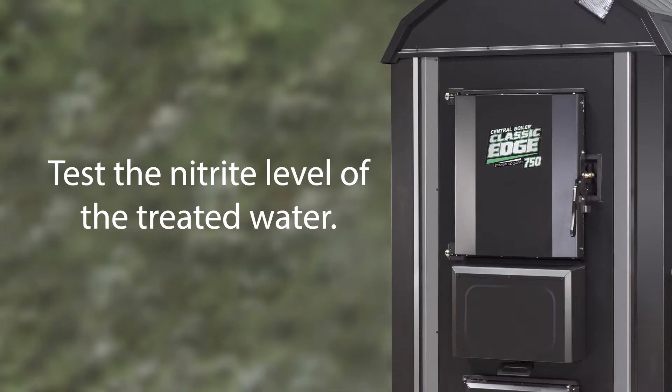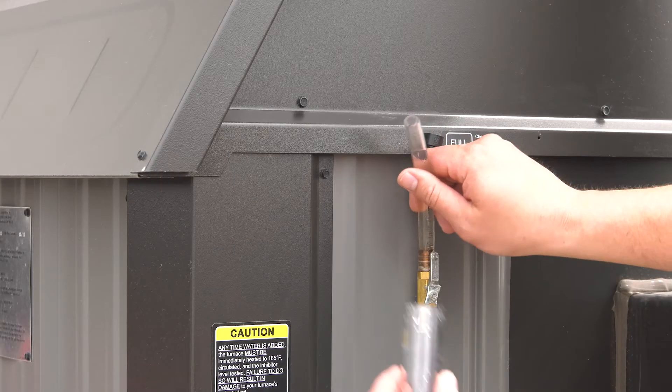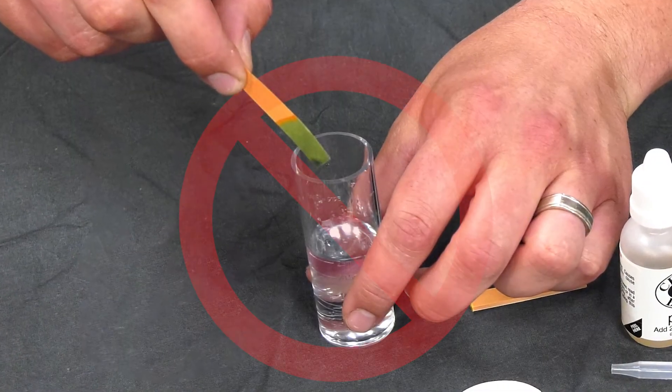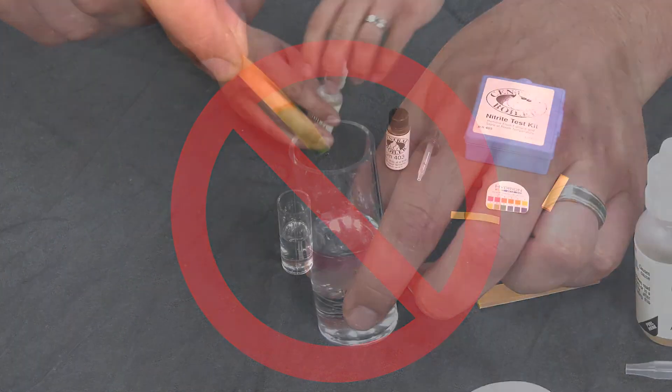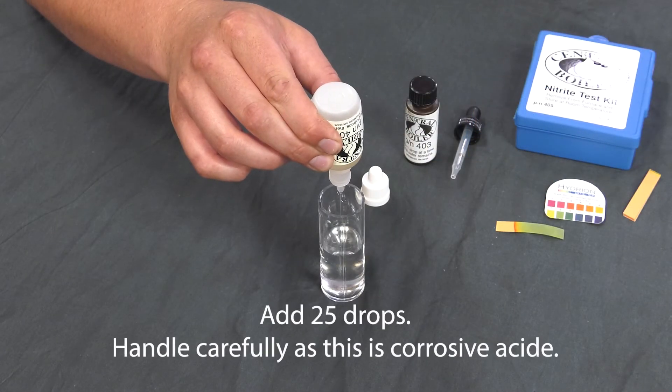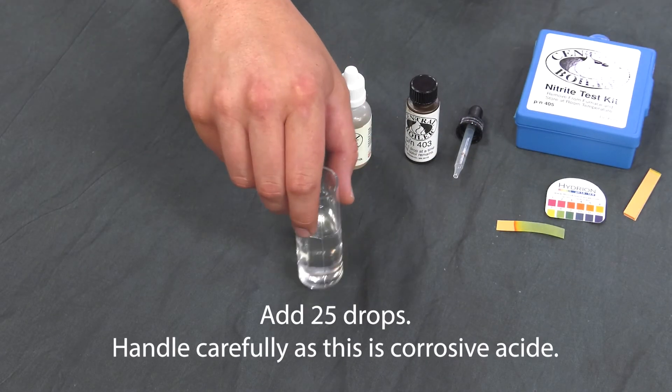Step 4. Test the nitrite level of the treated furnace water. Rinse and fill the sample tube to the 25 milliliter mark with treated water from the furnace. Do not reuse the water from the pH test. First, take out the sulfuric acid, part number 404 from the test kit. Add 25 drops to the water sample and swirl to mix.